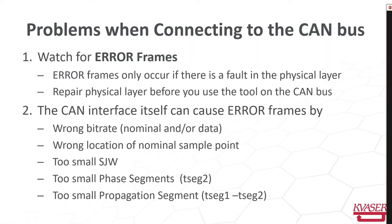First, if you set the wrong bit rate — nominal or data — you will cause error frames. If your sample point doesn't match the sample point used in the CAN FD system, you will also cause error frames. If your sync width is too small and doesn't handle the clock oscillator offsets in all the ECUs, you will cause error frames. TSEG2 must be large enough to fit both the sync width and other noise that can cause phase shifts and damage your sample point. And if there is a delay, the difference between TSEG1 and TSEG2 must be large enough to cover those delays on your CAN bus.